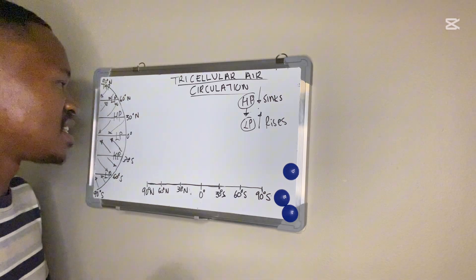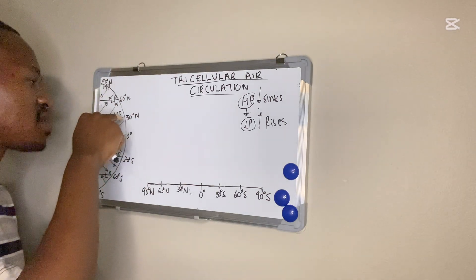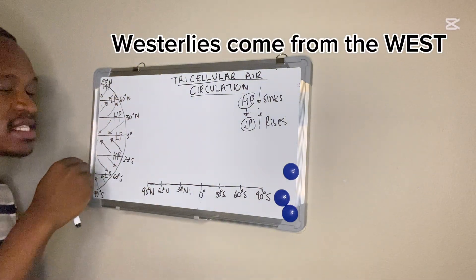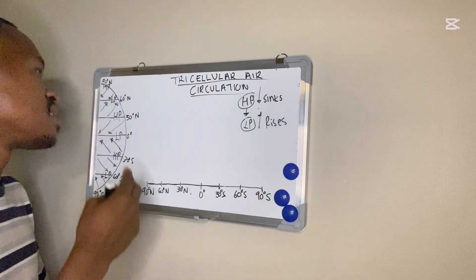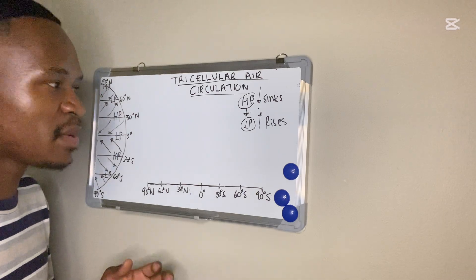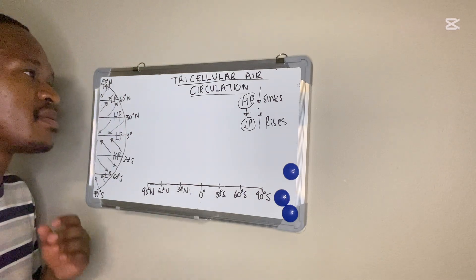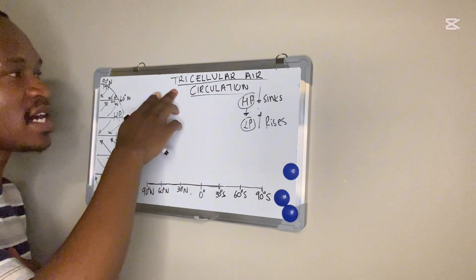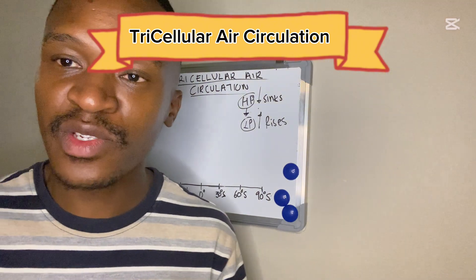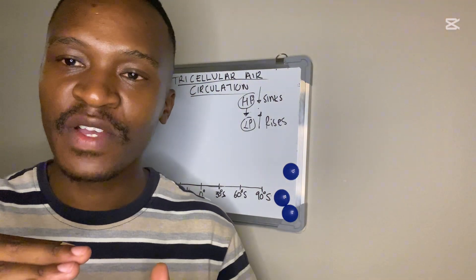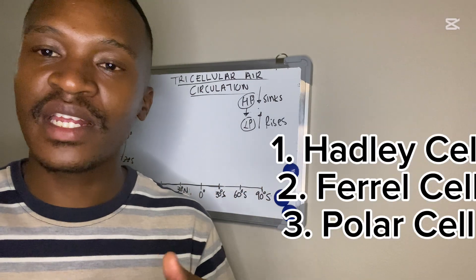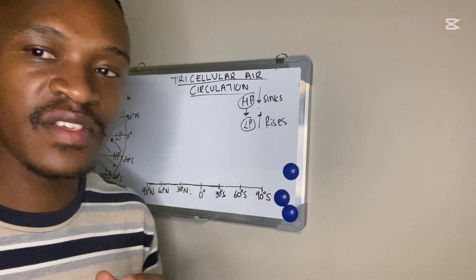From 30 to 60 degrees I have my westerlies, and then my polar easterlies. But in today's video we are moving on to tricellular air circulation. The movement of air in the atmosphere is not random — it follows a structured pattern forming three cells: the Hadley cell, the Ferrel cell, and the polar cell.